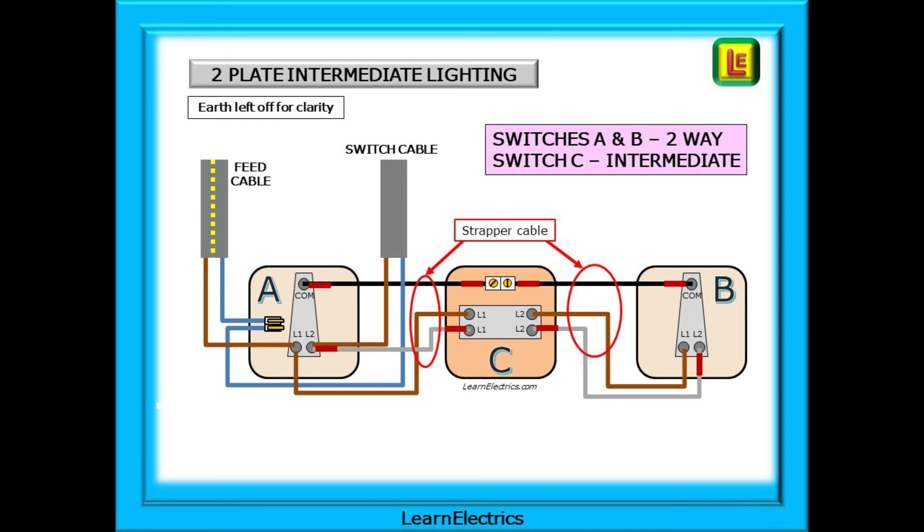This is a two-plate circuit wired for intermediate switching. If you have a two-way lighting circuit then all that you need to do is to install the cables so that the wiring to the intermediate switch is between the two two-way switches. The connections to the intermediate switch are made with three-phase plus earth cable, often called strapper cable. Take a moment to follow the electricity flow along the feed wire through the switches and up the switch wire to the ceiling rows.